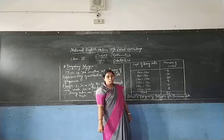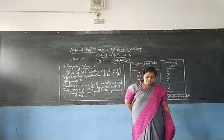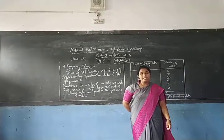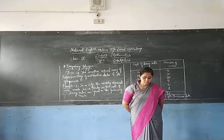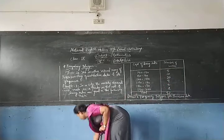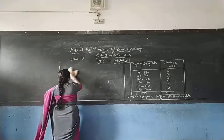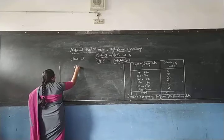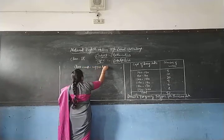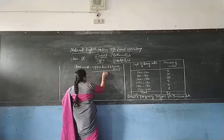Draw the frequency polygon for the above data without drawing the histogram. Since we want to draw a frequency polygon without the histogram, we have to find the class marks of the classes given above. The formula for finding the class mark is: class mark equals upper limit plus lower limit divided by 2.